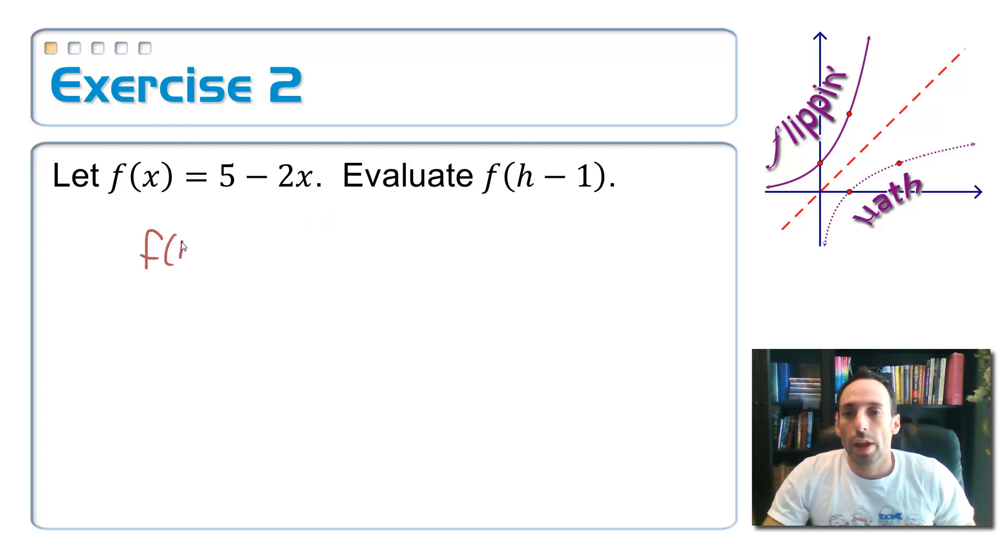So I'm plugging h minus one in for x. Five minus two times h minus one. And now let's just simplify. I don't do anything on the left side, I just simplify the right side. So five minus two h, and then a negative two times a negative one is the part that most people miss here. That's a positive two.